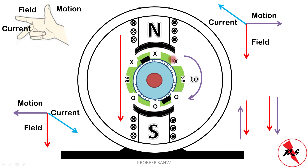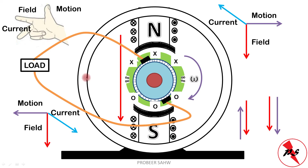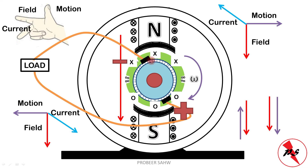For the set of conductors near the north pole, current goes into the screen; for those near the south pole, current comes out. When we connect an external load, current flows from the load terminal into the commutator brush, through the armature conductors, and back out. Since current exits from one brush, that brush is the positive terminal and the other is the negative terminal, confirming this machine produces DC electricity.